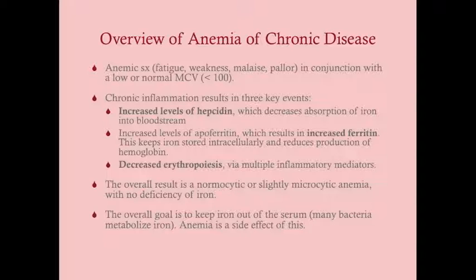Anemia of chronic disease is associated with chronic inflammation, resulting in three key events. First, there are increased levels of hepcidin — a protein discovered about 13 years ago. Hepcidin turns off the absorption of iron into the bloodstream by reducing expression of ferroportin, though that detail isn't necessary for the USMLE. Know that hepcidin reduces iron absorption.